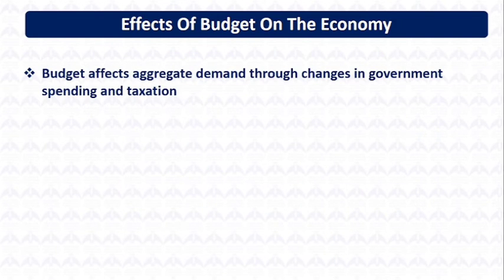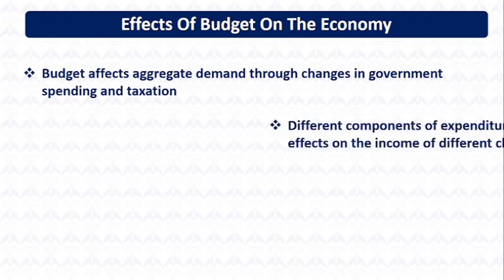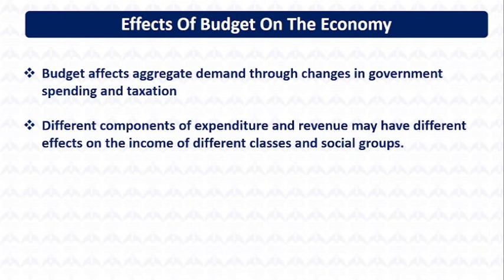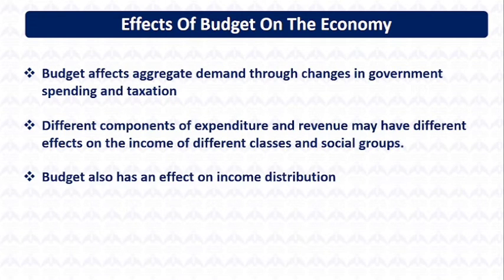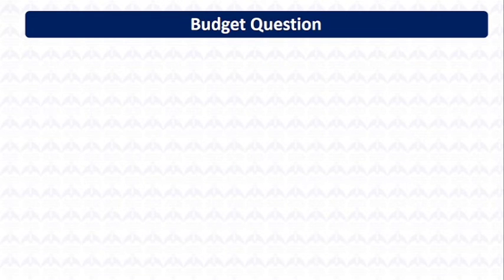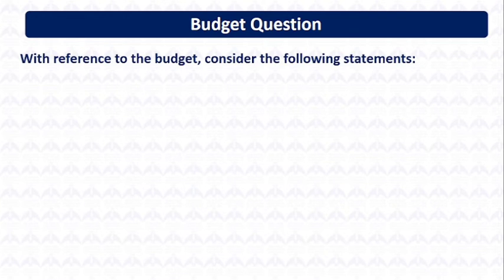The budget affects aggregate demand through changes in government spending and taxation. Different components of expenditure and revenue may have different effects on the income of different classes and social groups. The budget also has an effect on income distribution. Let's now see what are the important questions from this topic.